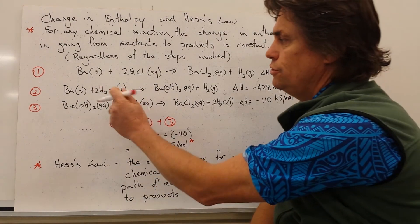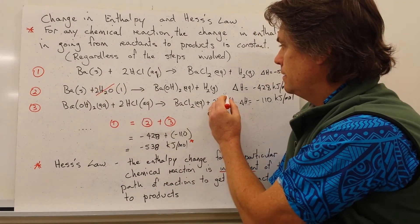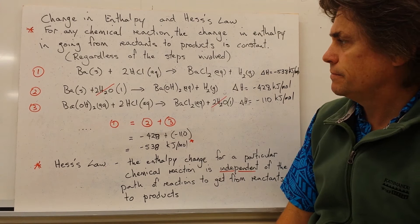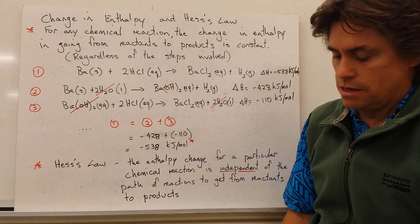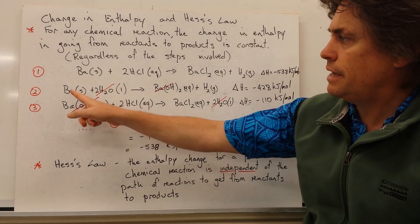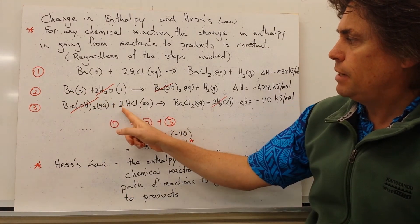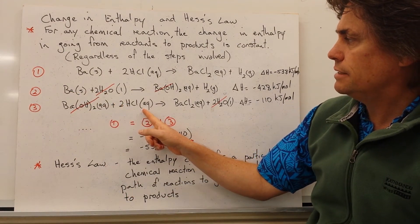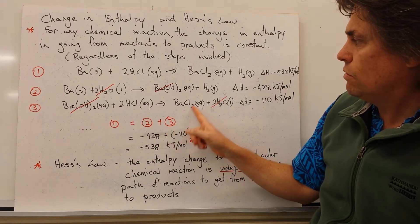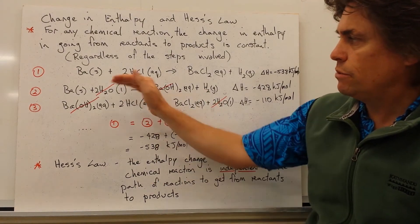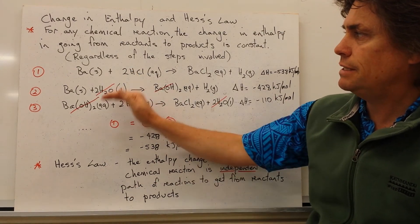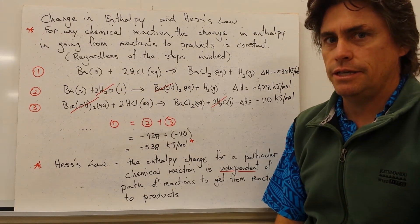Now you'll notice we've gone through two stages. If we add these two reactions together, these two parts cancel out. As does this side and this side. So what we're left with here is our barium solid form, plus our two lots of hydrochloric acid to give us our barium chloride and our hydrogen gas. So even though we've gone through the two steps, we have exactly the same reaction as our first reaction.